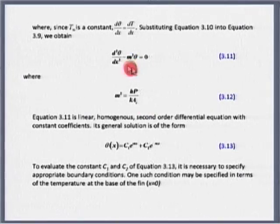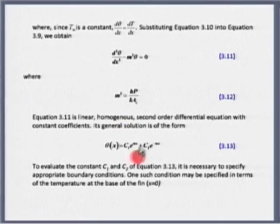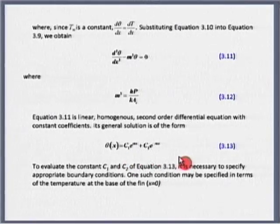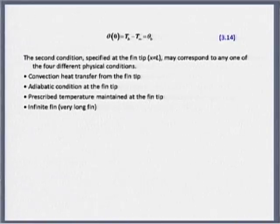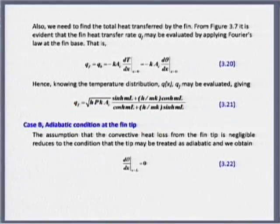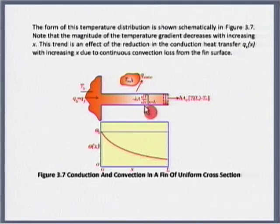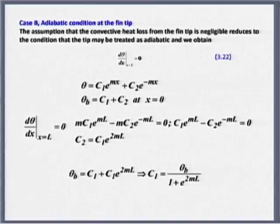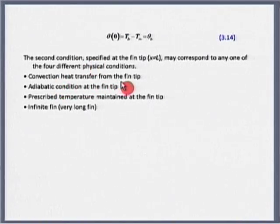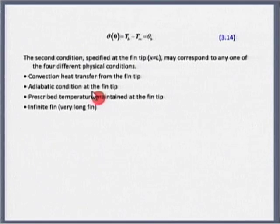One boundary condition is imposed on us: the base temperature. Taking any fin, the base temperature is fixed, but the other boundary condition can vary. The four boundary conditions we will consider are: convective heat transfer from the fin tip, adiabatic (insulated), prescribed temperature maintained at the fin tip, and infinite fin. The closest to real life would be convective heat transfer from the fin tip. Adiabatic is uncommon since we would not insulate a surface meant for heat loss. Infinite fin is a theoretical concept to determine the maximum useful length.